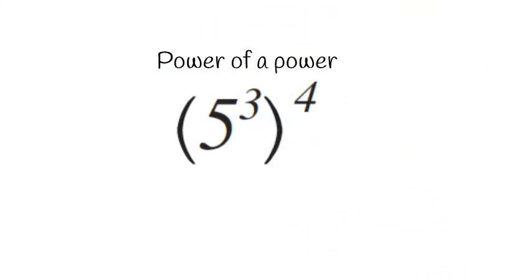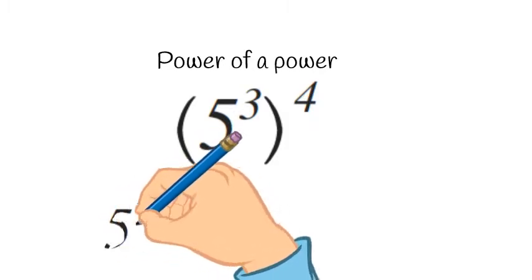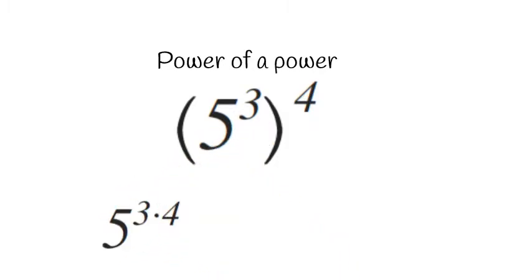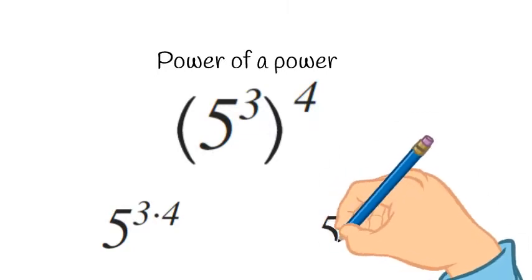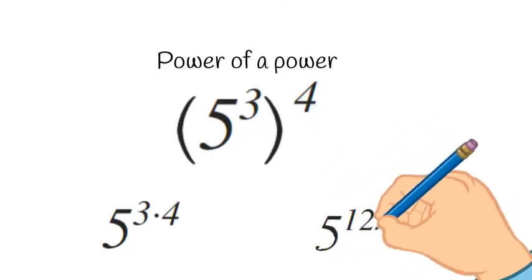And to figure this one out, we just multiply the exponents. So we get 5 to the 3 times 4, which is 5 to the 12th.